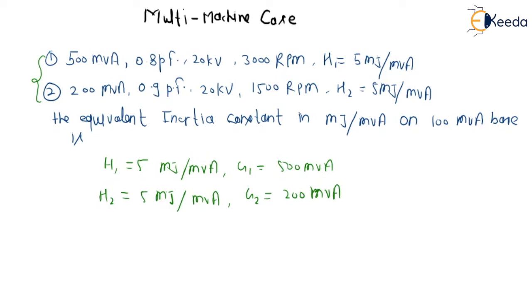asking? The equivalent inertia constant H equivalent. So we know that G base times H equivalent equals G1·H1 plus G2·H2. Putting all the values, G base means 100 times H equivalent